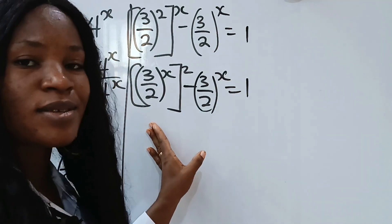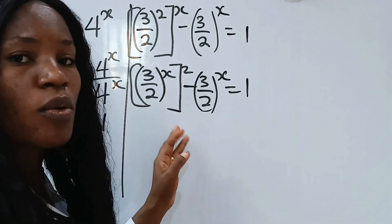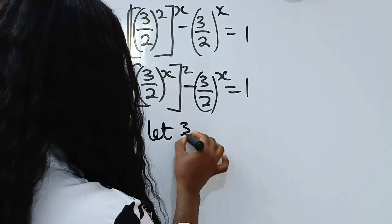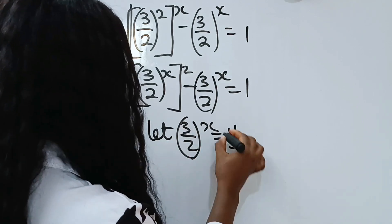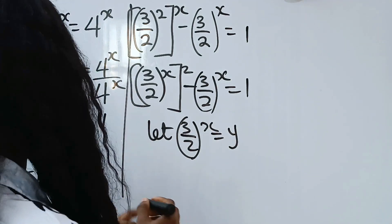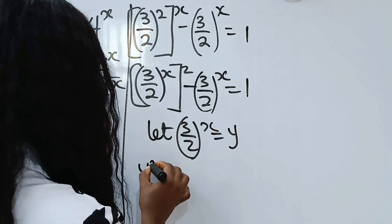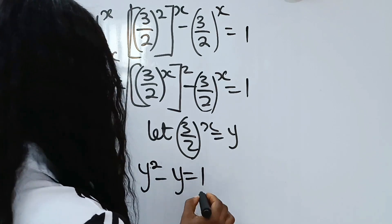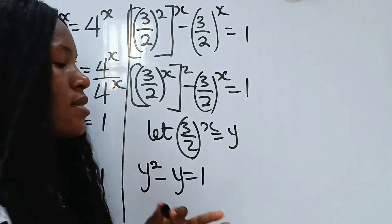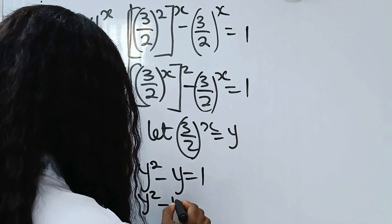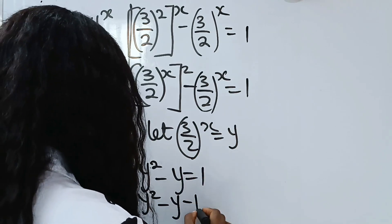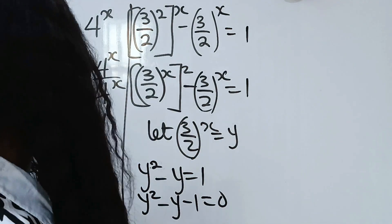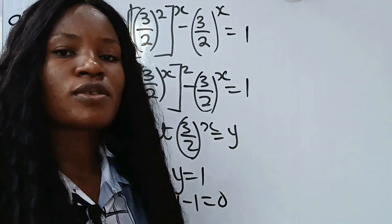You will notice that both terms have 3 over 2 to the x in common. So we let 3 divided by 2 raised to the power of x equal y. That means we can write this as y squared minus y equals 1, which we rewrite as y squared minus y minus 1 equals 0. We have formed a quadratic equation.